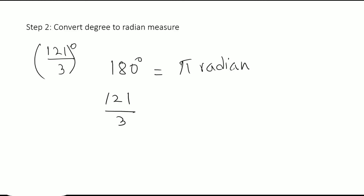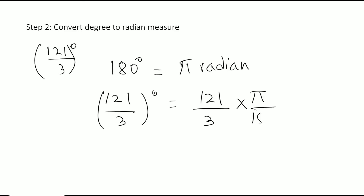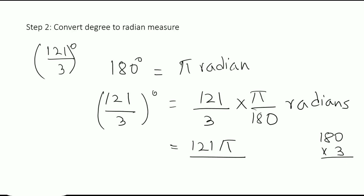We multiply 121/3 by pi over 180. Remember: whenever you are converting degrees to radians, multiply by pi over 180. There are no common factors in the numerator and denominator, so we multiply: 121 times pi in the numerator, and 3 times 180 equals 540 in the denominator. The answer is 121π/540.